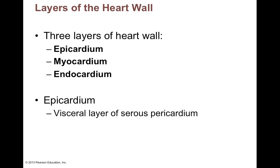There are three layers of the heart wall: the epicardium, the myocardium, and the endocardium. The epicardium is another name for the visceral layer of the serous pericardium — it's the superficial layer of the heart wall. The endocardium is the layer of tissue that lines the spaces within your heart, and it is continuous with the endothelium of your blood vessels — the same tissue that lines your blood vessels lines the inside of your heart, with no change in tissue at that junction.